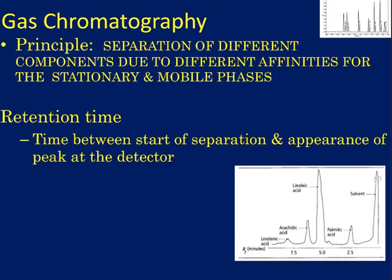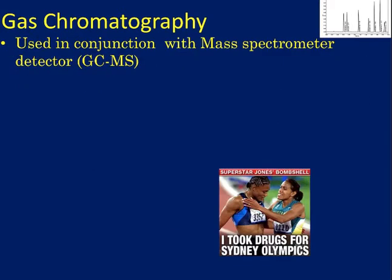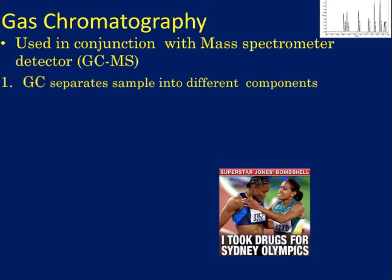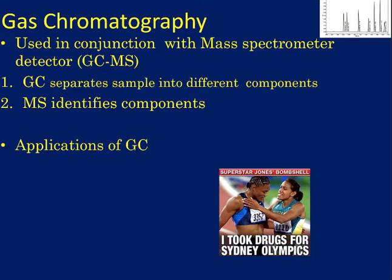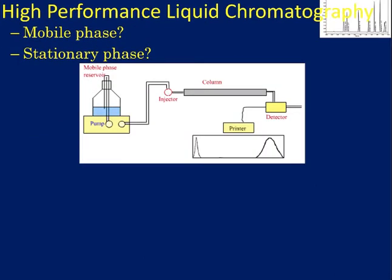The retention time in GC is the time between the start of separation and the appearance of a peak at the detector. The maths is all done for you — for example, linoleic acid comes off at roughly five minutes, so its retention time is five minutes. GC is most commonly coupled with mass spectrometry: the GC separates the components and the mass spec identifies them. This is used in drug testing of athletes — Marion Jones at the Sydney Olympics was caught using GC-mass spec — and in blood alcohol testing.